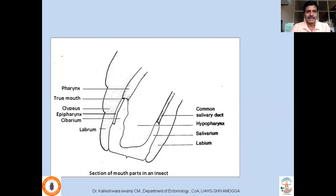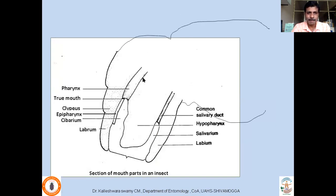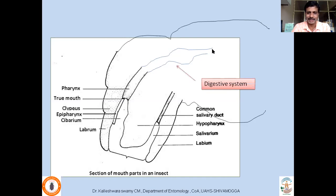From one of the previous classes discussing the cross-section of mouth parts, the exoskeleton and buccal cavity can be seen here. This region is called the cibarium and salivarium, and the true mouth starts from here. The digestive system runs as a tube-like structure from the mouth.